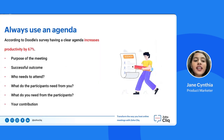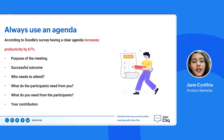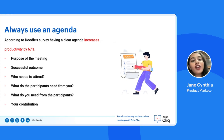Always use an agenda. According to a survey by Doodle, having a clear agenda increases productivity by 67%. Let everyone know what to expect during the meeting and when. With that information, they can plan their schedule better and know what details to pay attention to during the call.